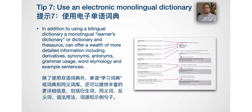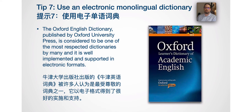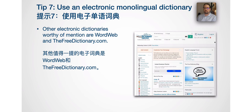Tip number seven is to use an electronic monolingual dictionary. In addition to using a bilingual dictionary, a monolingual learner's dictionary or dictionary and thesaurus can offer a wealth of detailed information, including derivatives, synonyms, antonyms, grammar usage, word etymology, and example sentences. The Oxford English Dictionary, published by Oxford University Press, is considered to be one of the most respected dictionaries and is well implemented in electronic format. Other electronic dictionaries worthy of mention are WordWeb and the Free Dictionary, which can be found online and in app stores.